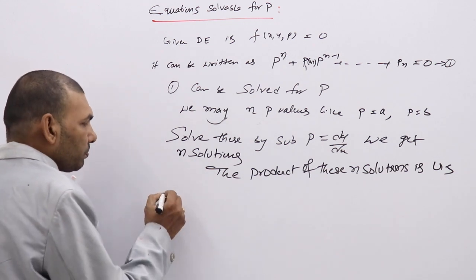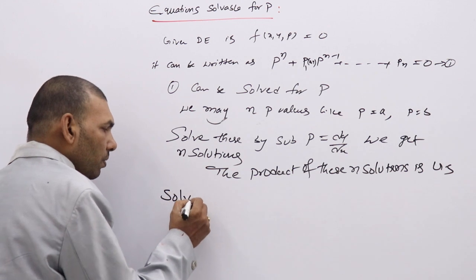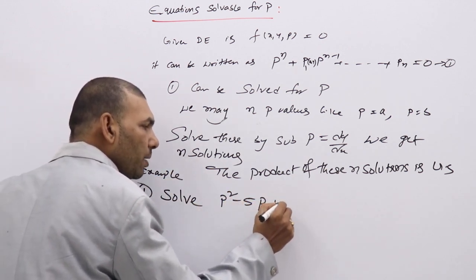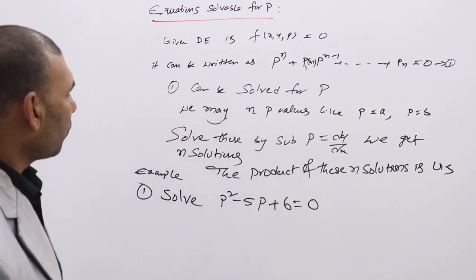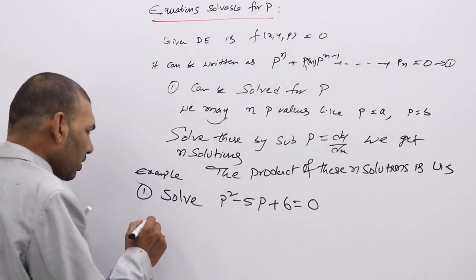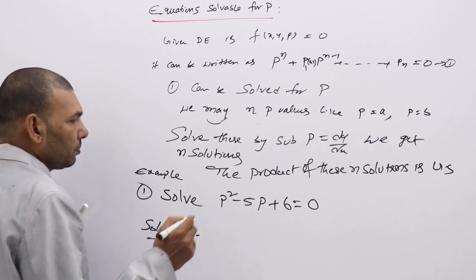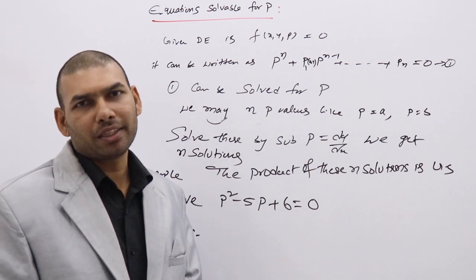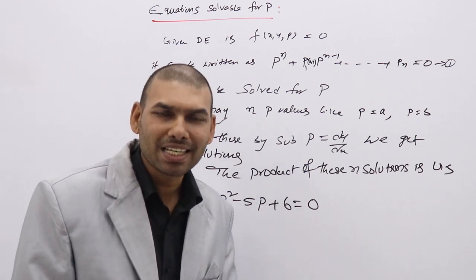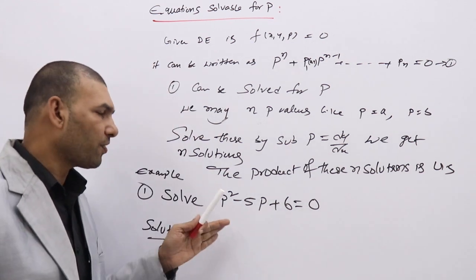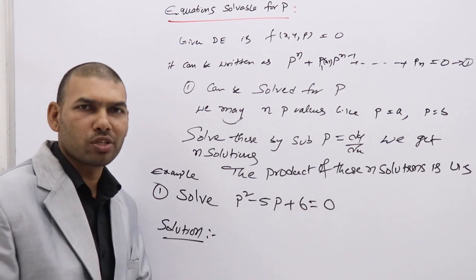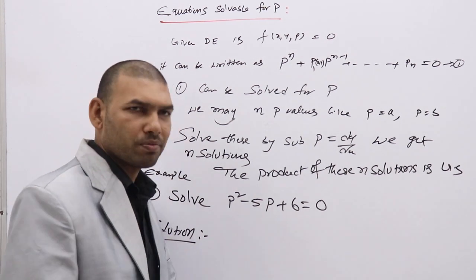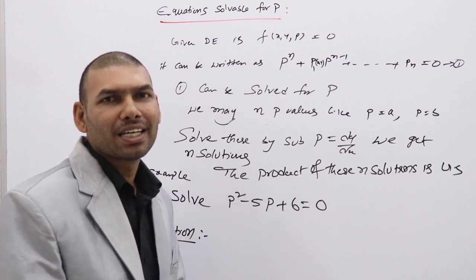For example, let us solve: P² - 5P + 6 = 0. This equation has only P terms, and since P = dy/dx, we have (dy/dx)² — degree 2, order 1. So this is a DE of first order but not first degree with only P terms, and we can directly treat it as a DE solvable for P.